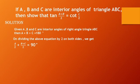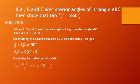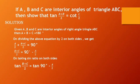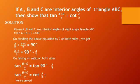Now transposing a/2, we get (b + c) / 2 equal to 90 degrees minus a/2. Taking tan ratio on both sides, tan((b + c) / 2) equals tan(90 degrees minus a/2). From trigonometric ratios of complementary angles, tan(90 degrees minus a/2) equals cot(a/2). Therefore, tan((b + c) / 2) equals cot(a/2).